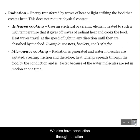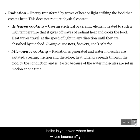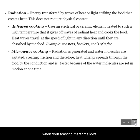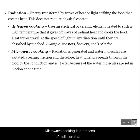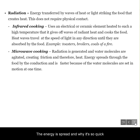We also have conduction through radiation. There's infrared cooking, and an example of that is the broiler in your oven where heat waves bounce off your food and that food absorbs it. When you're out camping, toasting marshmallows — that is infrared cooking. Microwave cooking is a process of radiation that agitates water molecules all at one time, and that's how that energy is spread and why it's so quick.